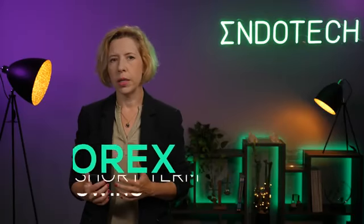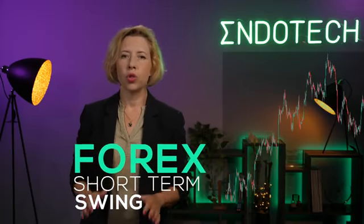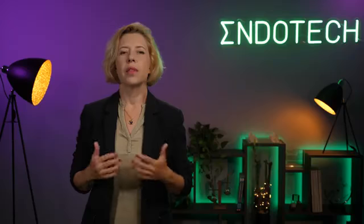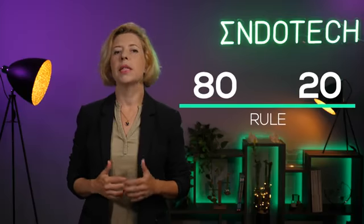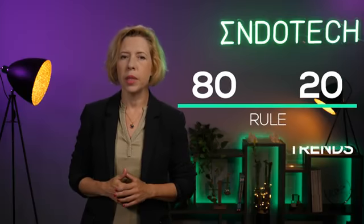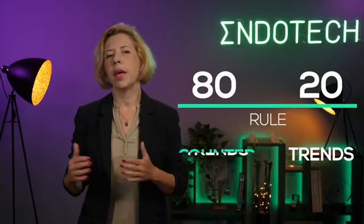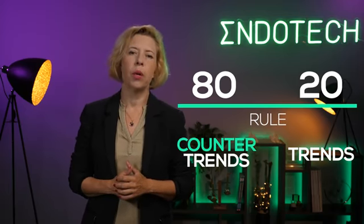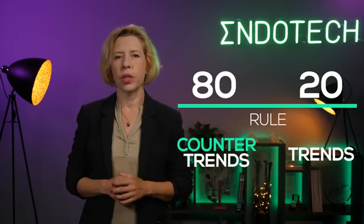On the forex side, we do the opposite – short-term swing. Why do we do the opposite on the forex side? The answer lies in the last difference – price patterns. There is a standard 80-20 rule that says markets trend about 20% of the time and spend the other 80% grinding through trading ranges, pullbacks, and other counter-trend actions.